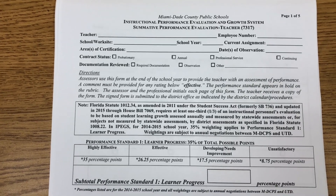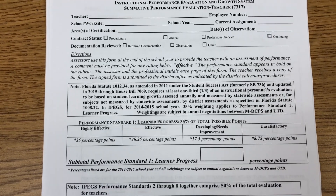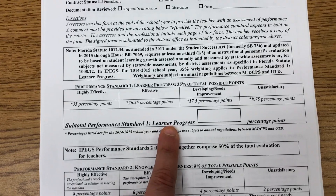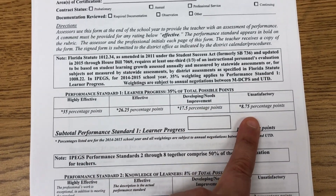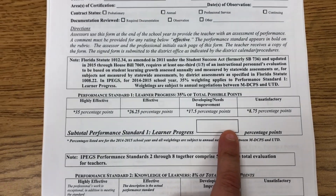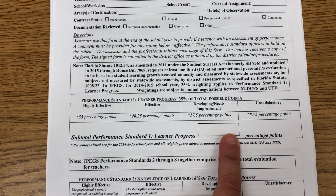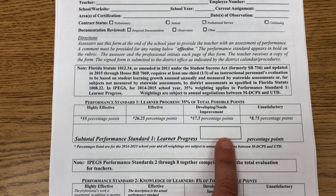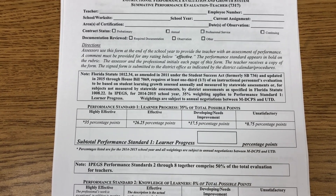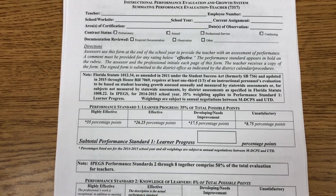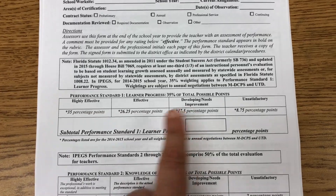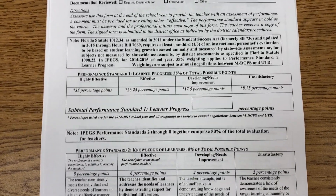During the summative meeting at the end of the year, the assistant principal or principal shares the results of our progress for each professional standard. Professional Standard 1, Learner Progress, is a percentage point assessed according to how students do on the FSA. This is usually not given to us until the following school year since we are just now finishing FSA testing, which runs until May 18th. The state takes time because every student in Florida from third grade through tenth grade takes the FSA, and then the state grades it, returns results to schools, and develops the percentage points each teacher earns based on student performance.